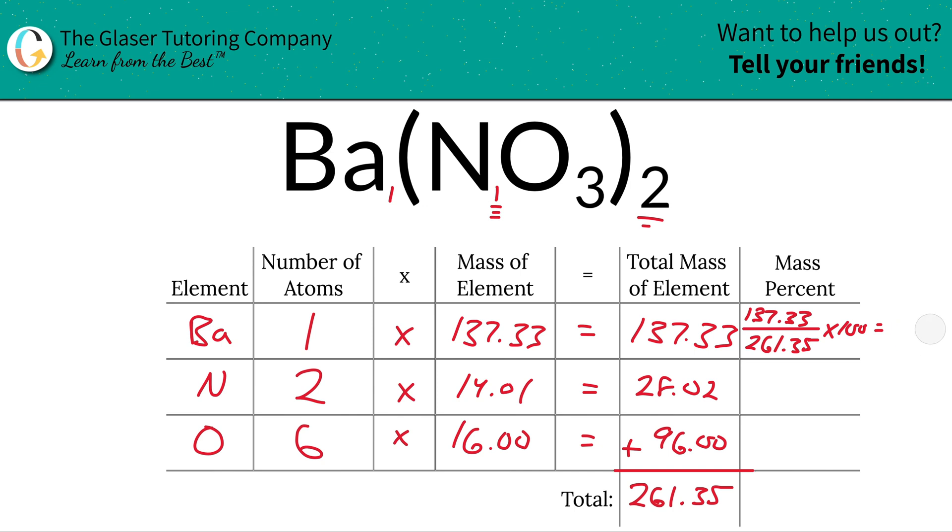I'm going to run out of space. I'm going to erase this work, okay? Make sure you write that down. So this is going to be about 52.54%. That would be the percent mass of barium.